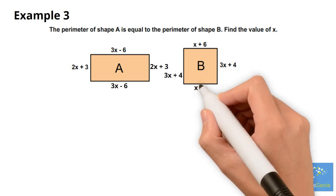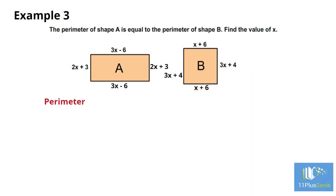For shape A, find the perimeter 3x minus 6 plus 2x plus 3 plus 3x minus 6 plus 2x plus 3. This simplifies to 10x minus 6.